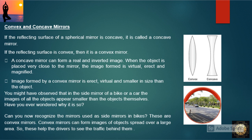Convex and concave mirrors: if the reflecting surface of a spherical mirror is concave, it is called a concave mirror. If the reflecting surface is convex, then it is called a convex mirror.